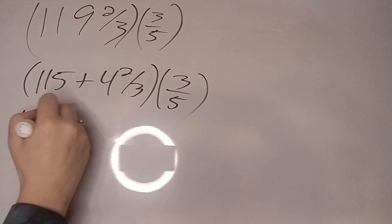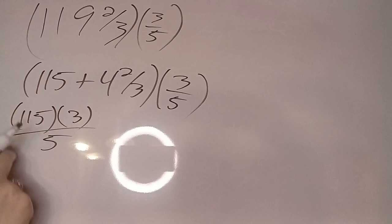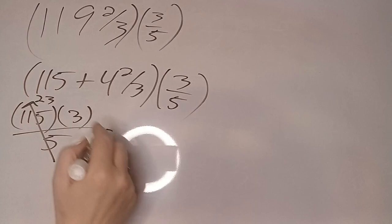This becomes 115 times 3/5. Well we already know that that is 23. 23 times 3 is 69.